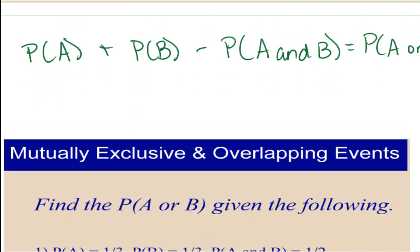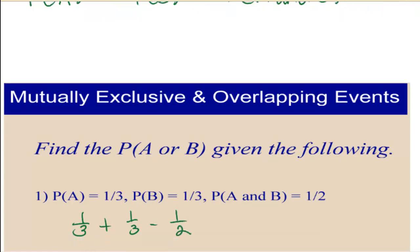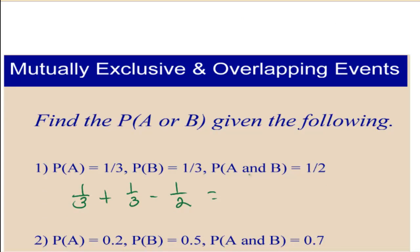Let's apply this to some algebra. If I know the probability of A is one-third and the probability of B is one-third, and the probability of A and B is one-half, find the probability of A or B. It's going to be my individual probabilities added together minus my overlapping, which is the and, and that gives me my or. So I get two-sixths plus two-sixths, which is four-sixths minus three-sixths equals one-sixth.